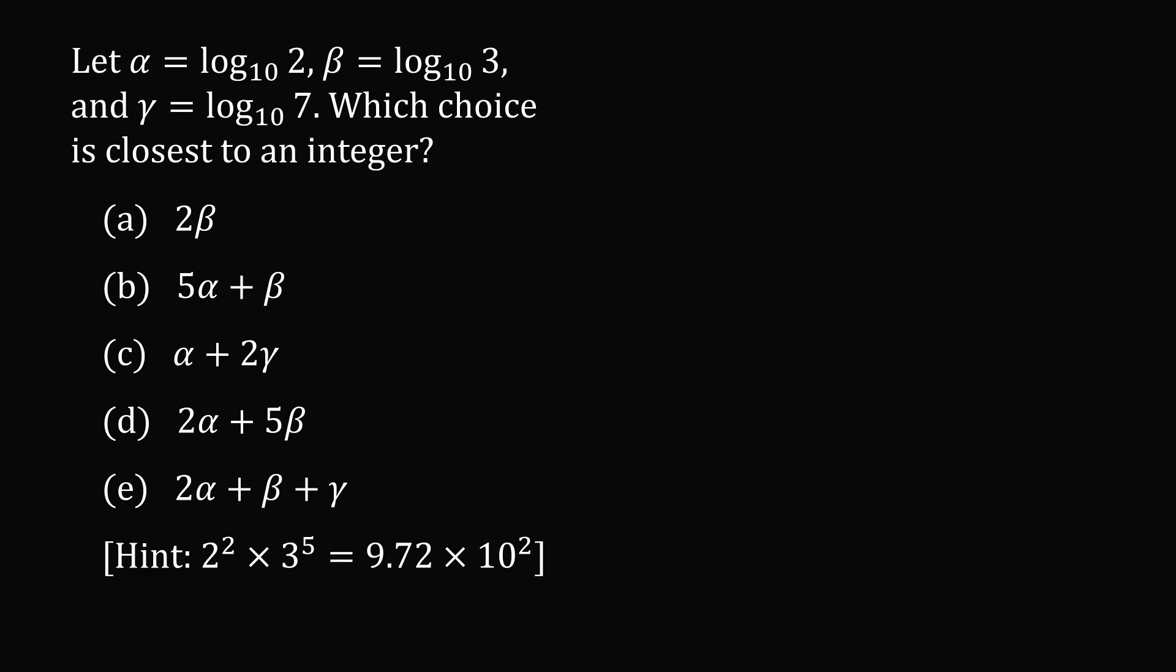Which choice is closest to an integer? Answer choice A is 2 beta. Answer choice B is 5 alpha plus beta. Answer choice C is alpha plus 2 gamma. Answer choice D is 2 alpha plus 5 beta. And answer choice E is 2 alpha plus beta plus gamma.